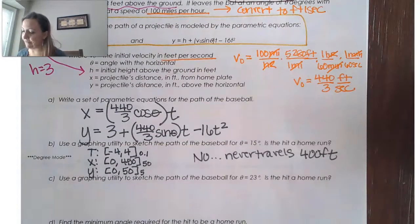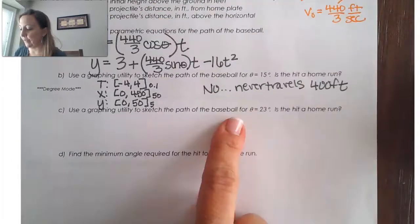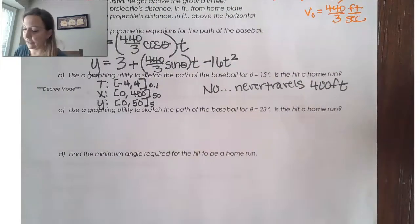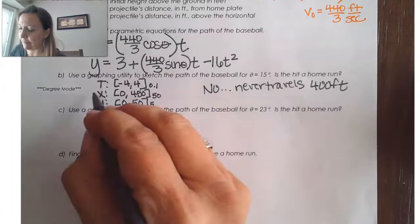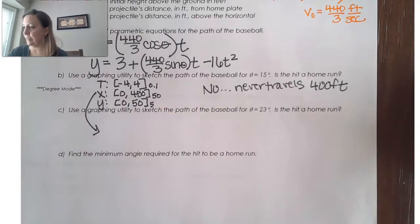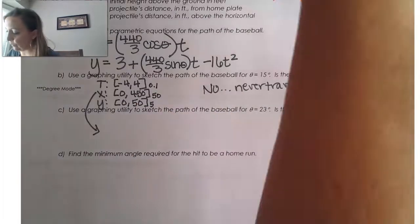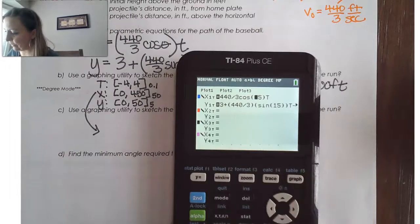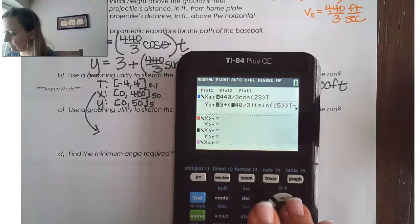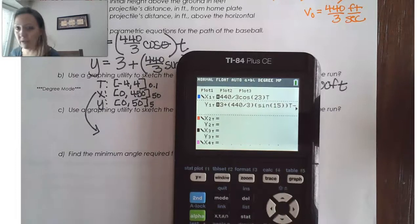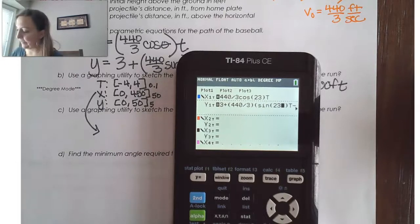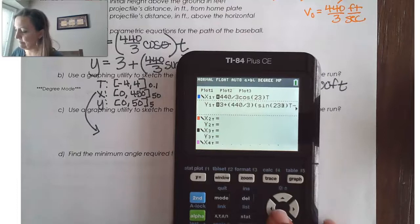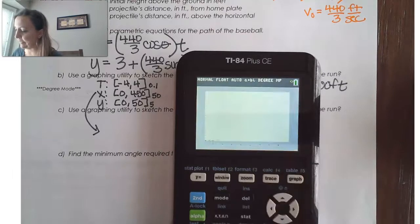So, now it wants us to find the path of the baseball for theta equals 23 degrees. So, let's use the same thing. Let's use the same scale. But now, just in our y equals, instead of the 15, I'm just going to type 23 over that instead. And then we'll see if that makes a difference. And now, let's graph this.